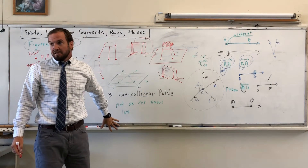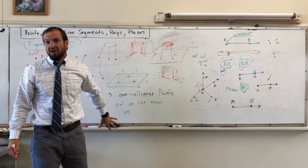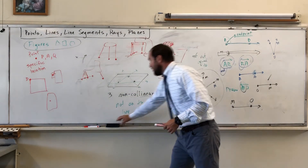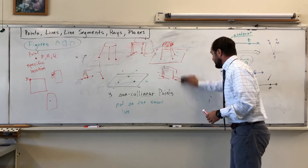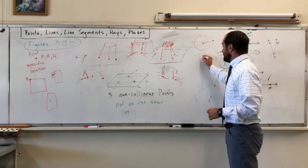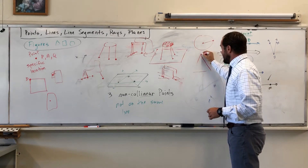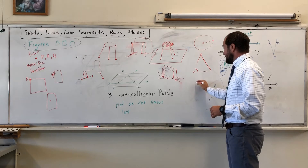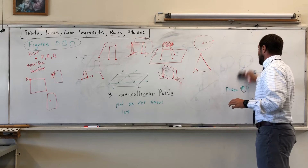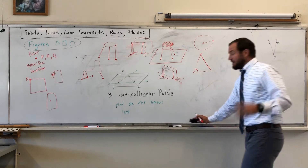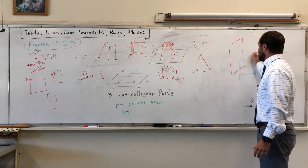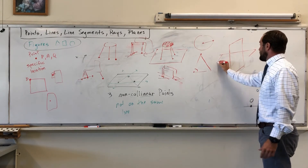So that's points, lines, line segments, and planes — everything in the kitchen sink. There are other parts, but this is a good introduction. These concepts will be used to build everything else going forward — like a radius of a circle or an angle of a triangle.